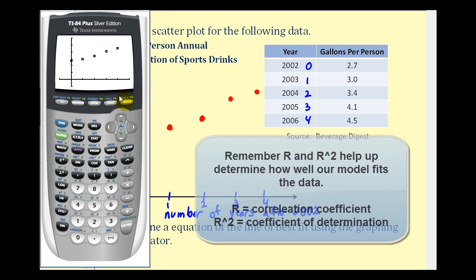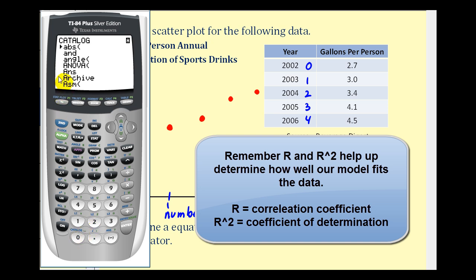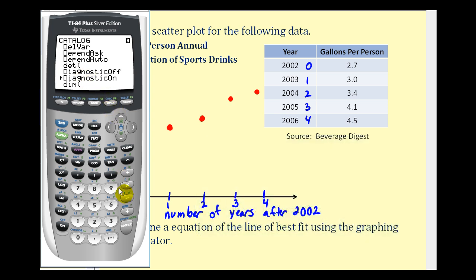Now before we perform the linear regression, if we want r and r squared to show on the screen, we have to make sure that our diagnostic feature is turned on. So if we press second, zero, this brings up the catalog. And we're going to scroll down to D or press D. I'm looking for diagnostic on. Here it is. I'm going to press enter and then enter. And now r and r squared will show up when I perform linear regression.